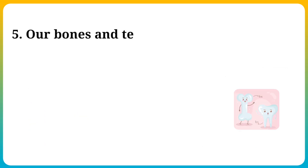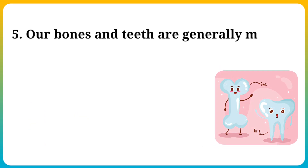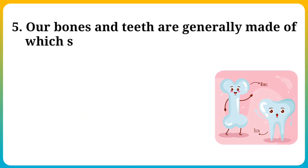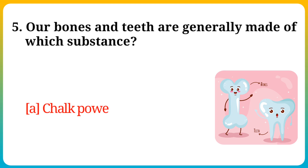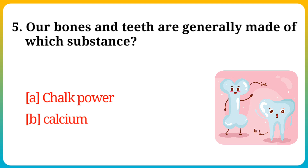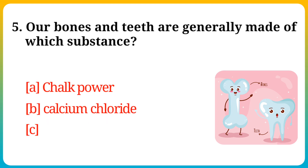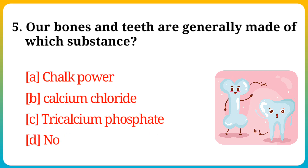Question number 5. Are bones and teeth generally made of which substance? Option A: Chalk powder, B: Calcium chloride, C: Tricalcium phosphate, D: None of these.